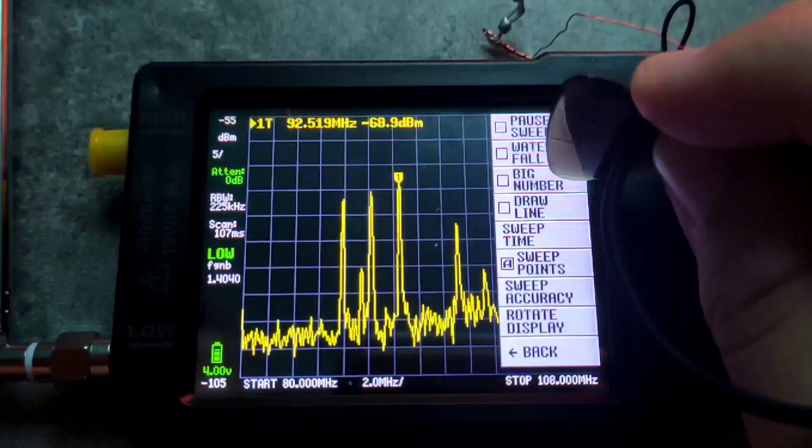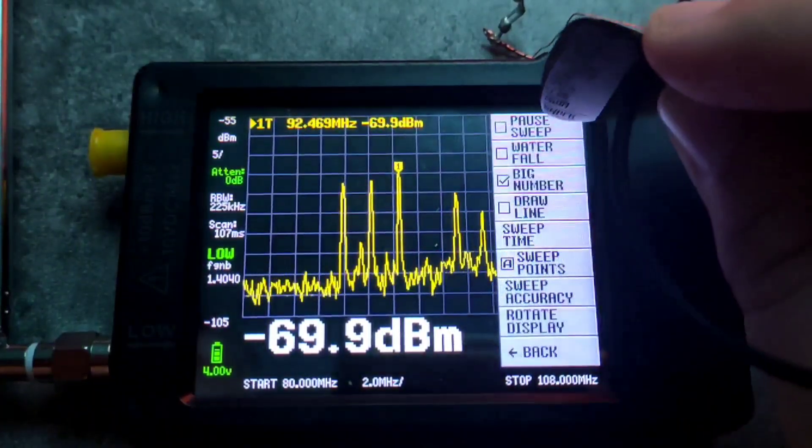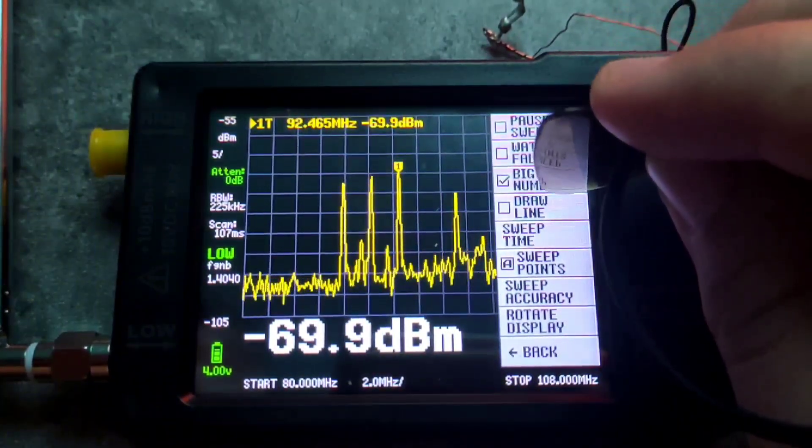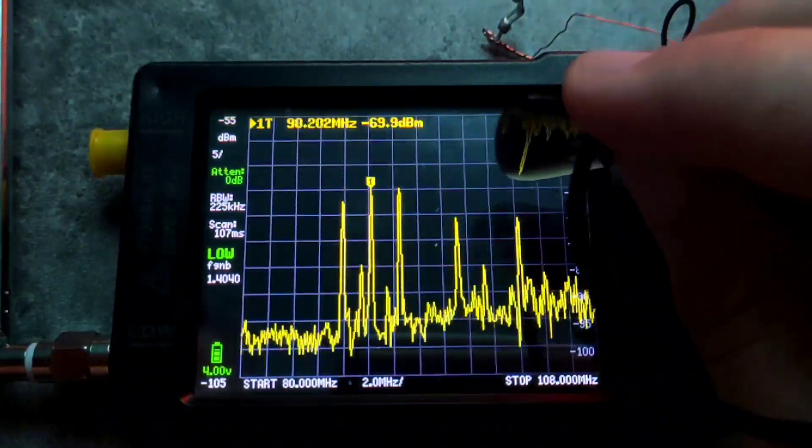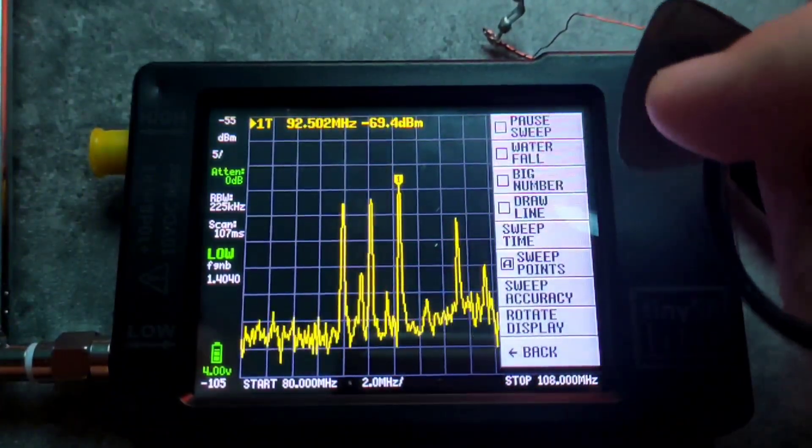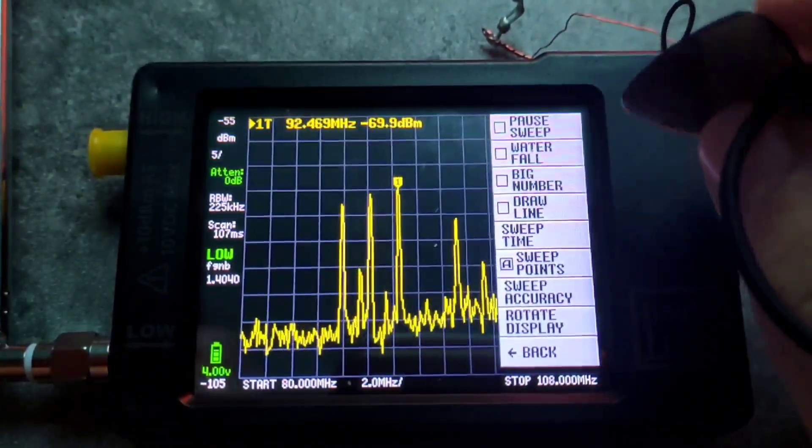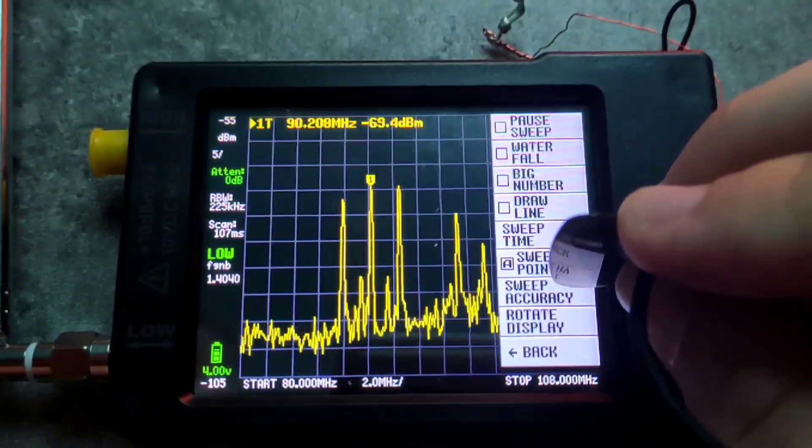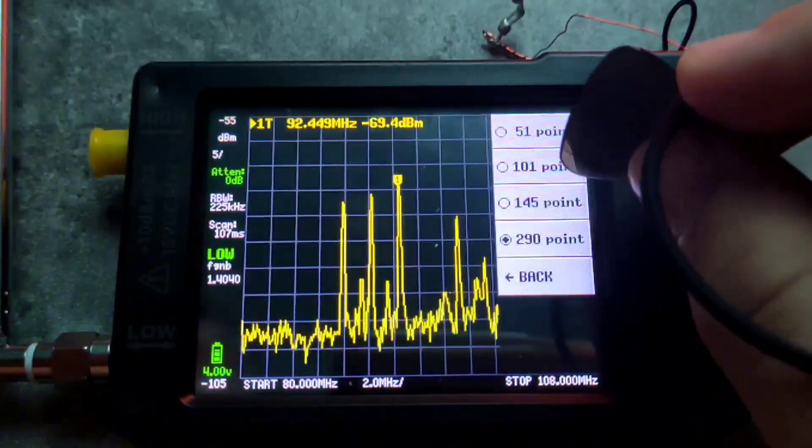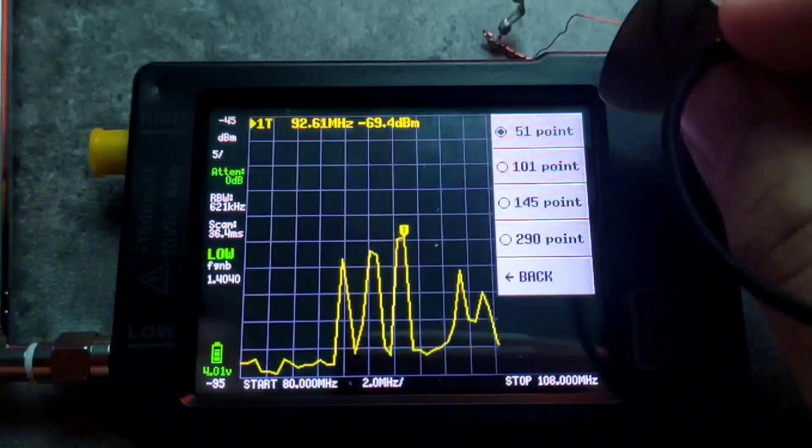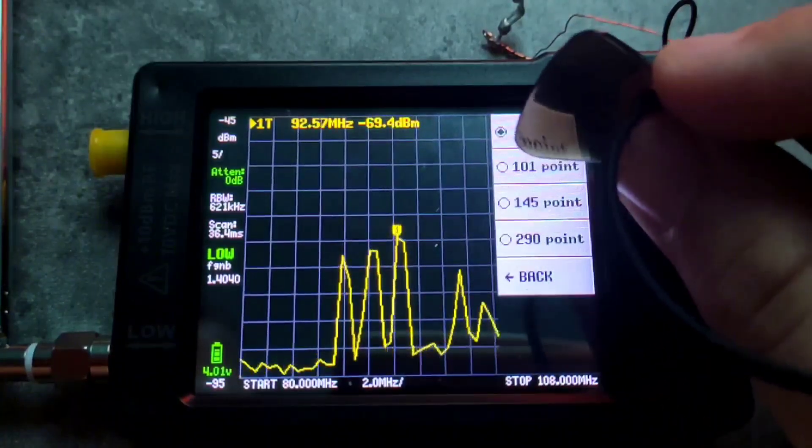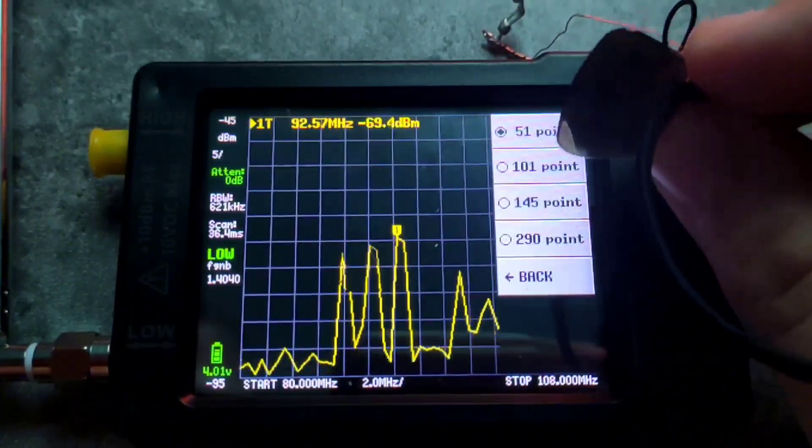We also use big numbers over here which will represent the decibel. You can also draw a line if you are interested to basically make sure or for certain measurements. We also have sweep accuracy, but the sweep points are more important. This basically will make it also faster but also less precise.